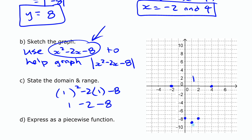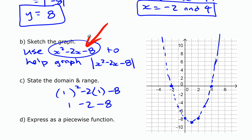That's enough to get the shape of the original quadratic. Now, for the absolute value: anywhere the original function already has a positive y value, nothing changes — those parts of the graph stay the same. But the parts that have negative y values are going to get reflected up above the x-axis.